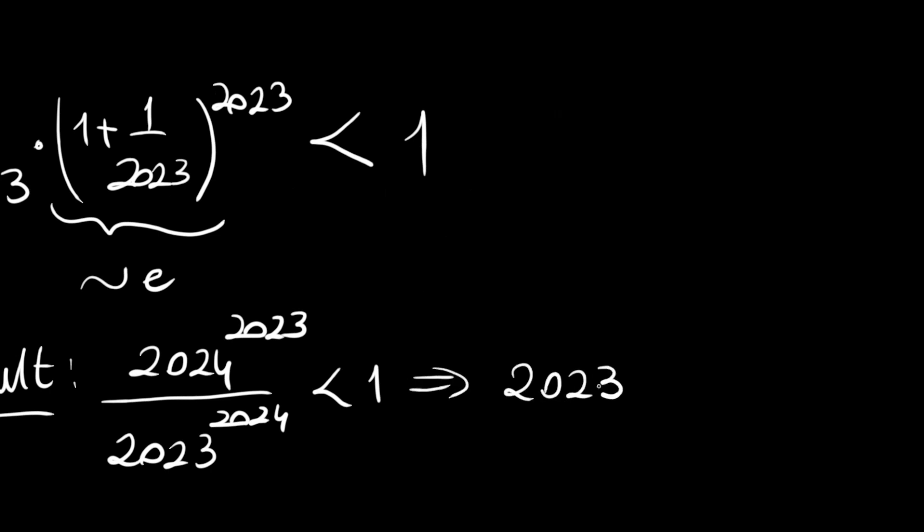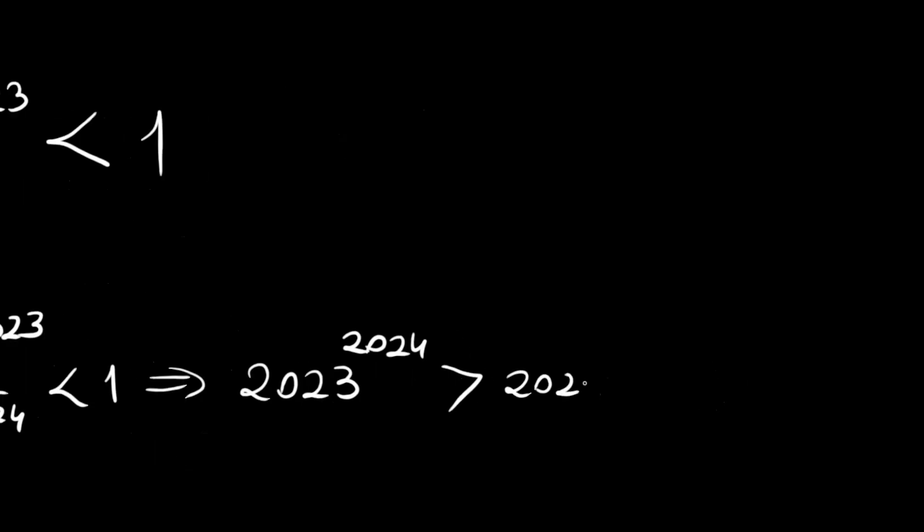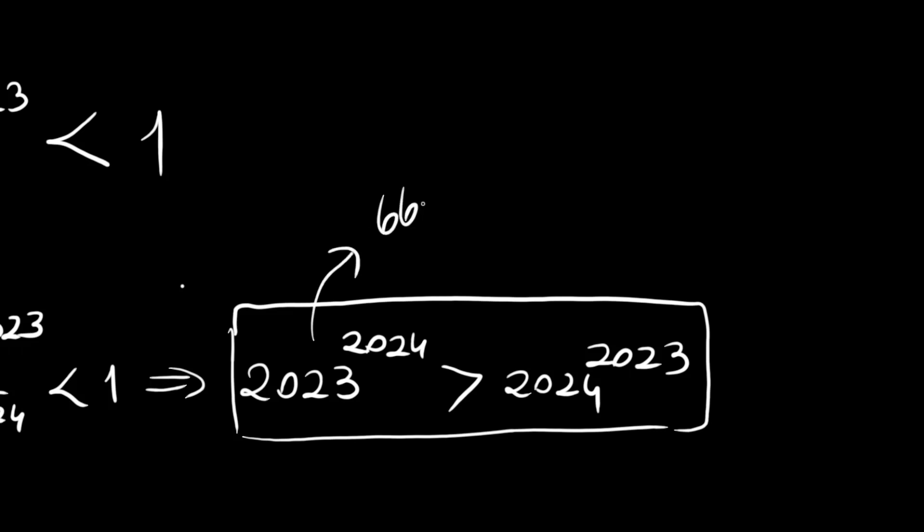Therefore, 2023 to the 2024 is larger than 2024 to the 2023. That's the result from Wolfram. We can say this 2023 to 2024 number is exactly 6692 decimal digits.